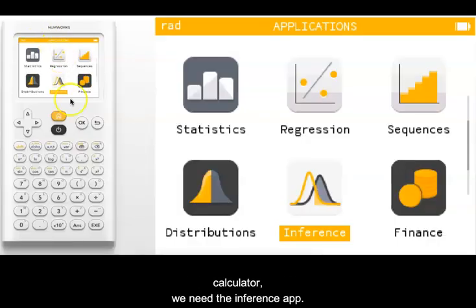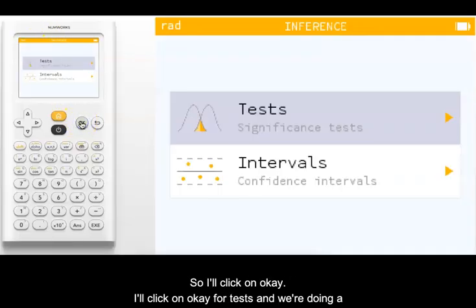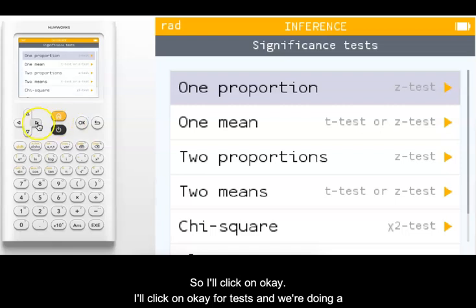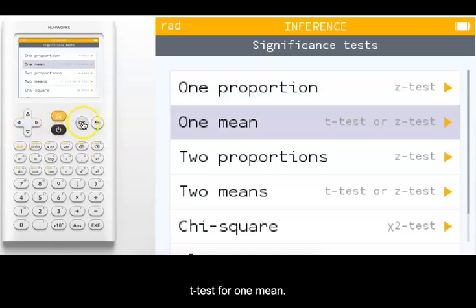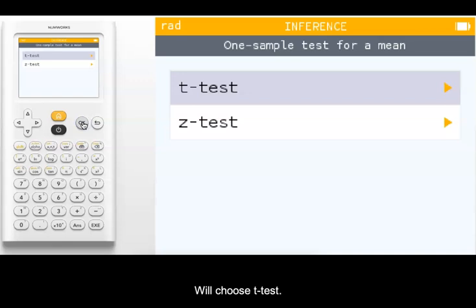To do this on the NumWorks calculator, we need the inference app. I'll click on OK for tests, and we're doing a t-test for one mean. We'll choose t-test.